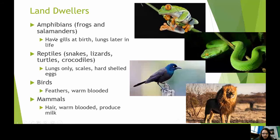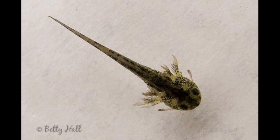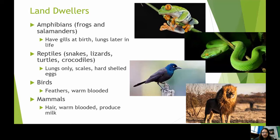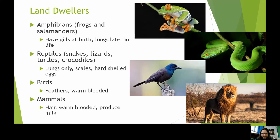Amphibians are our next step. If we stopped with a fish that has both gills and lungs, now we have organisms born as tadpoles with gills. They undergo a transformation — losing gills and gaining lungs — allowing them to leave the water. However, their skin is very sensitive to dryness, so they need to stay near water or in wet environments. They also still lay eggs in water, so amphibians are largely limited to aquatic environments.